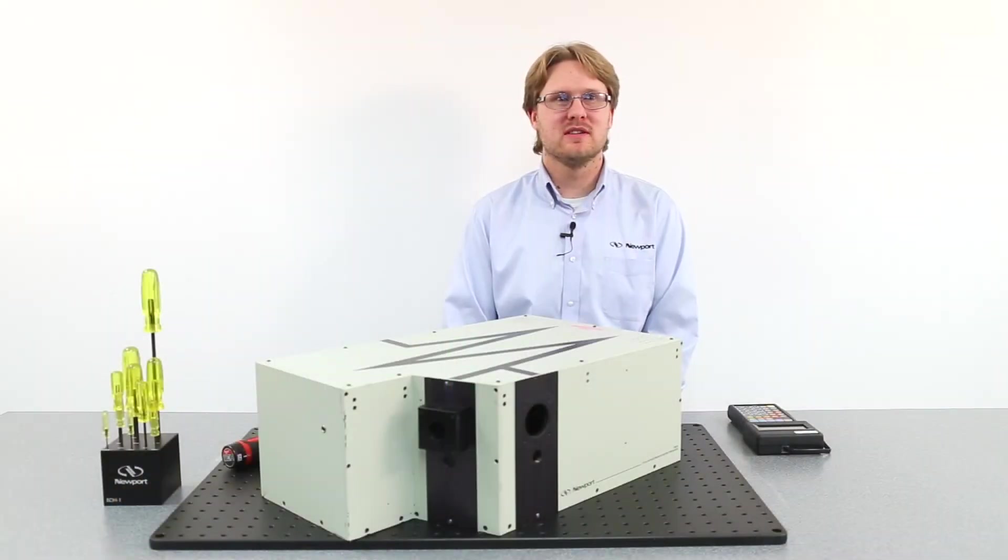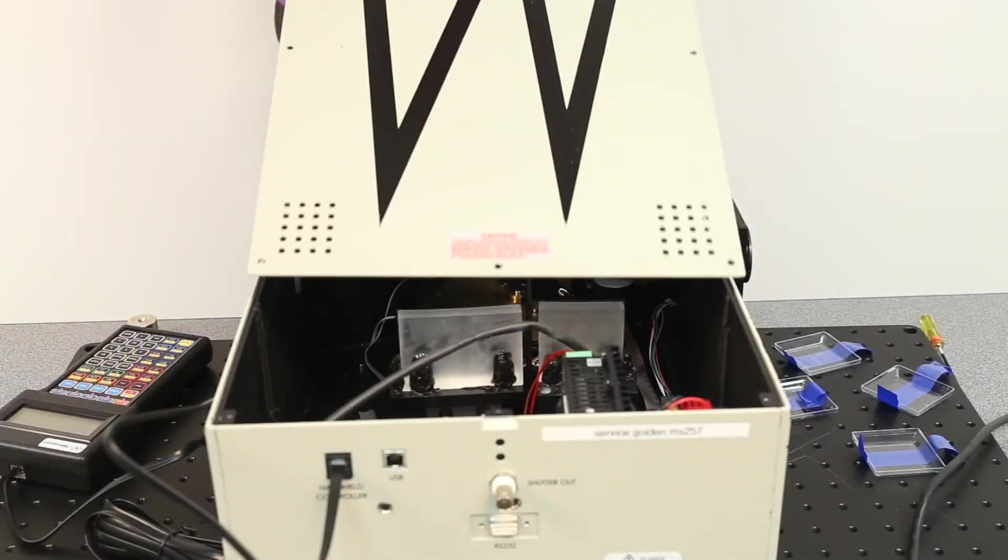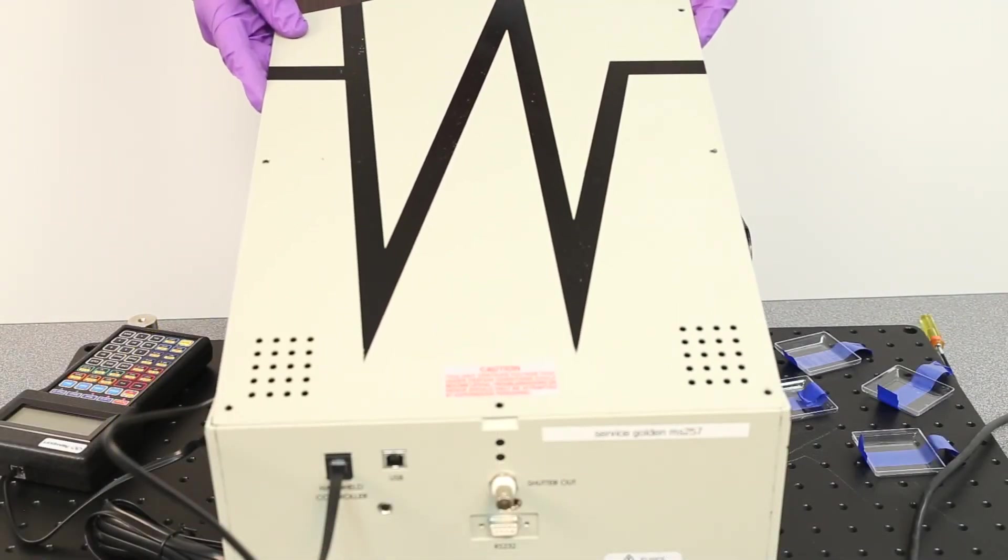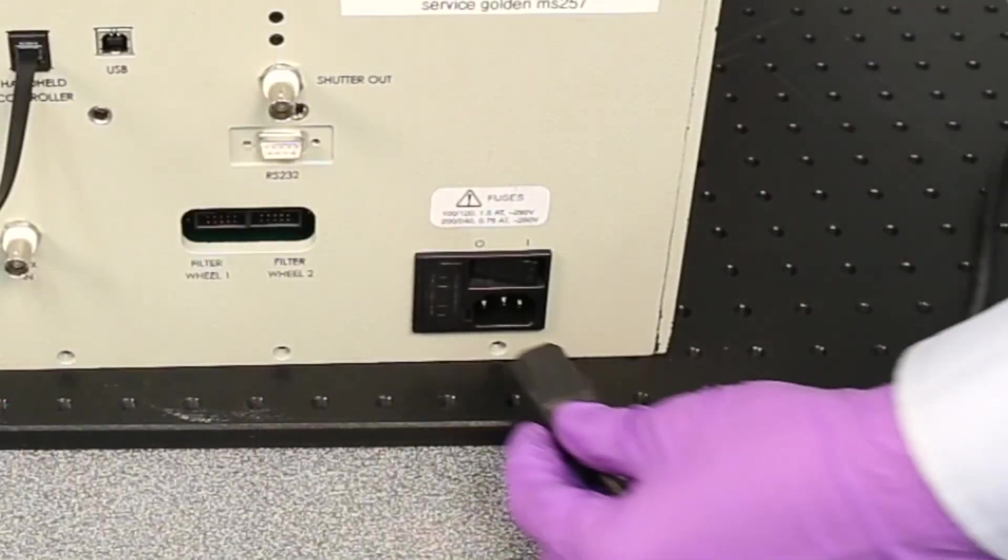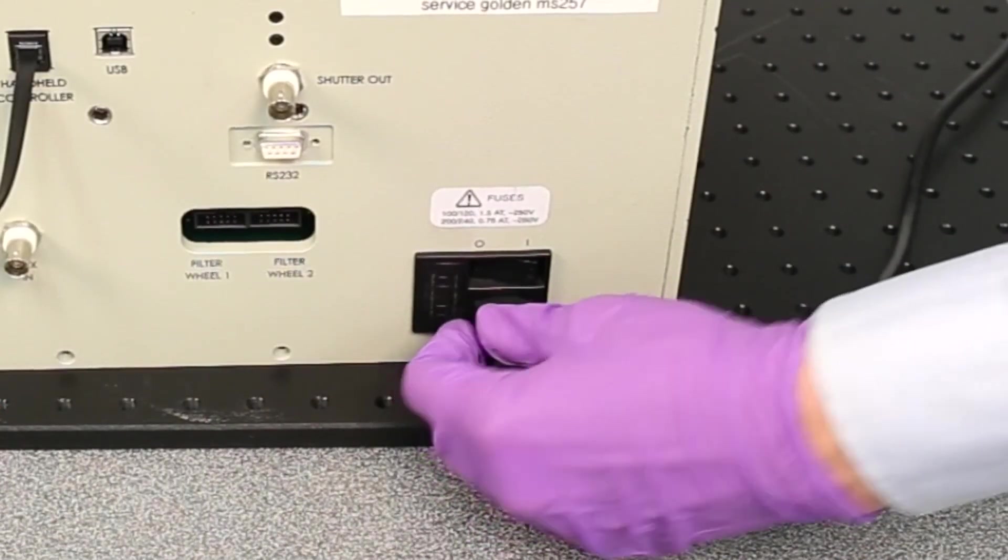With the grating turret successfully installed, now we can reinstall the MS-257 cover by tightening all cover screws. After these steps have been completed, we can plug in the power cord and turn on the MS-257.